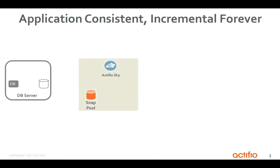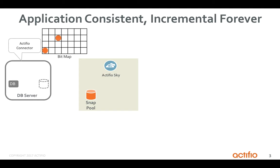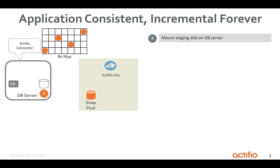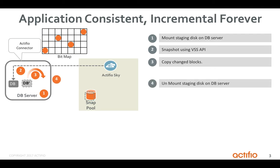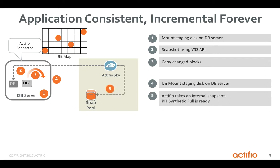Let's see how Actifio does application consistent incremental forever backups for Microsoft SQL databases in virtual machines or physical servers. Actifio deploys a lightweight Actifio connector that keeps track of change blocks. When a backup job begins, Actifio dynamically presents a virtual LUN — a staging disk — to the database server over fiber channel or iSCSI. Actifio issues a snapshot using Microsoft VSS APIs to get application consistent backups, then the connector copies the change blocks to the staging disk, and Actifio unmounts the staging disk.